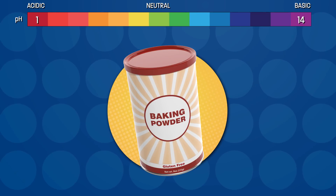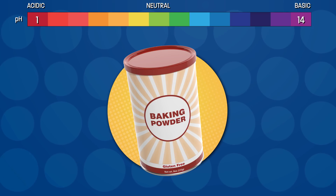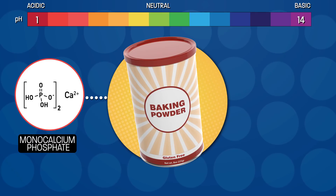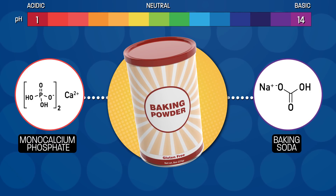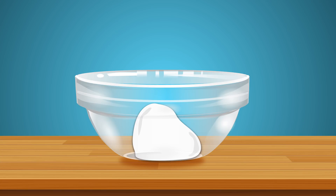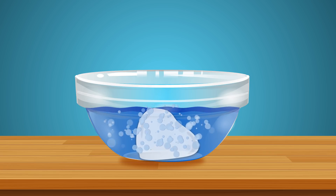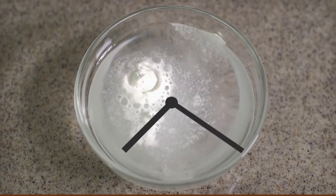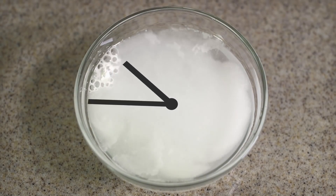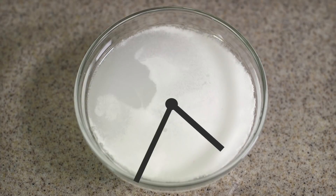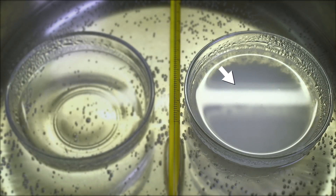Here's how baking powder works: it contains at least one solid acid — in this case monocalcium phosphate — and it also contains a solid base, almost always baking soda, also known as sodium bicarbonate. The acid and base react with each other when water is added to produce carbon dioxide gas. But we waited for this reaction to finish — in other words, we waited for all the acid and the base to react with each other. So where are these extra bubbles coming from?